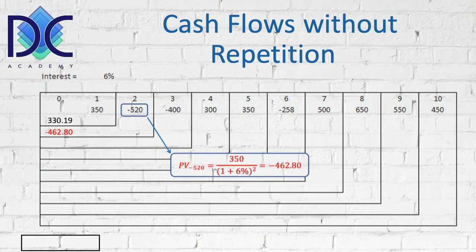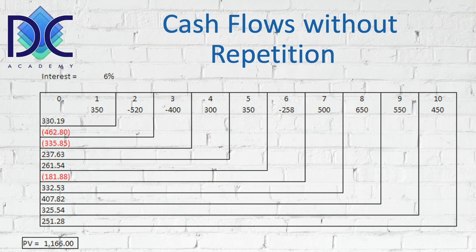We do that for all the other numbers. We see two other red negative numbers, but most of them are positive. When we add all of them together we find a present value of about 1,166 dollars. This is a typical non-repeating cash flow — there is no repetition. We have to calculate cash flow by cash flow.